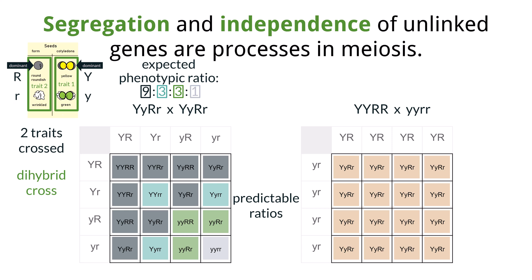Mendel's Law of Segregation, his first law, states that each gamete will receive only one of two copies that the parent can give. This movement of chromosomes during meiosis gives us this 9 to 3 to 3 to 1 ratio. Random orientation and crossing over were discussed in D2.1.